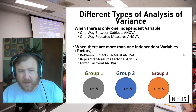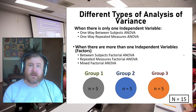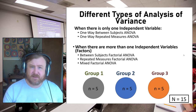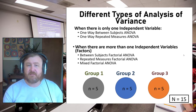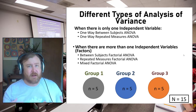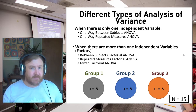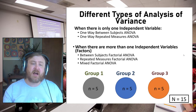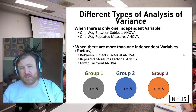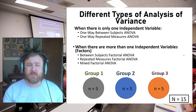So ANOVA, in sum, is a family of different tests that vary based on the number of independent variables you're analyzing as well as the research design — whether it's a between-subjects, within-subjects, or mixed design.